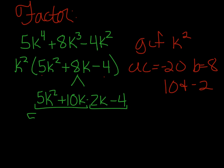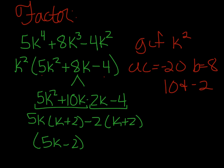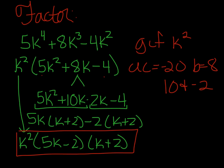So, we have 5k factors out. We have k plus 2. We can factor out a negative 2. k plus 2 gives us 5k minus 2 and k plus 2. And don't forget that k squared from the original. And so, now it is factored down into unfactorable polynomials.